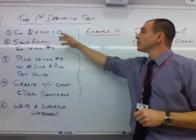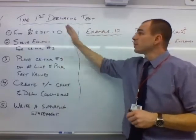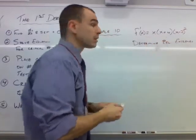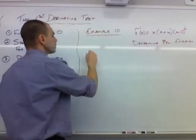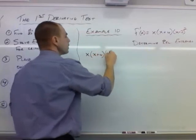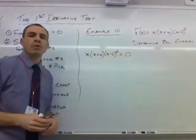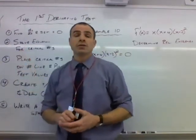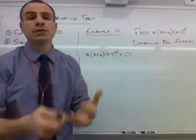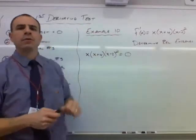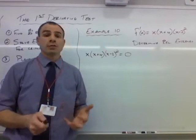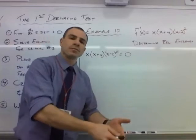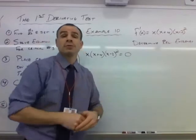In general, when doing the first derivative test, the first thing you want to do is find the derivative and set it equal to zero. We've already got the derivative, so we set x(x+4)(x−2)² equal to zero and solve. When we solve this, we're finding when the derivative equals zero or does not exist — this derivative always exists. Those solutions are our critical numbers, which will lead us to either a relative max, a relative min, or perhaps neither.